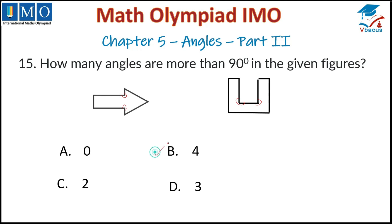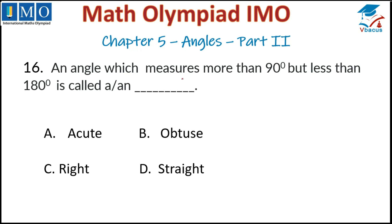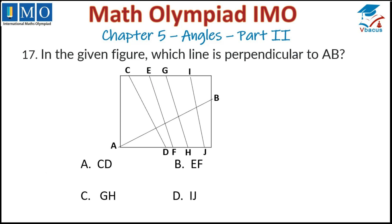Question number 16: An angle which measures more than 90 degrees but less than 180 degrees is called an obtuse angle. That is option B, so option B is correct.